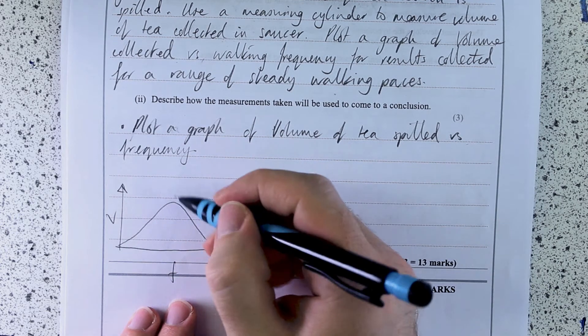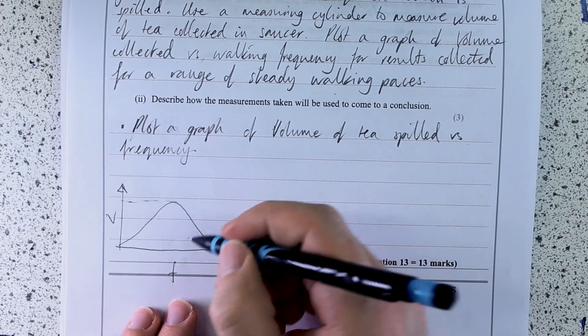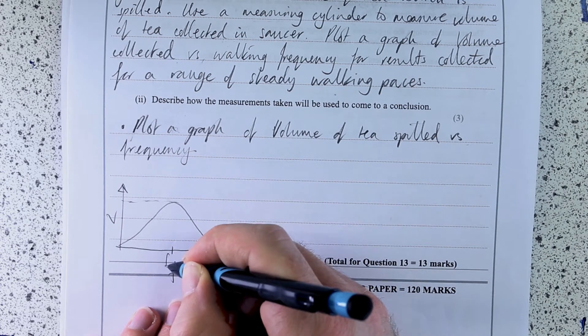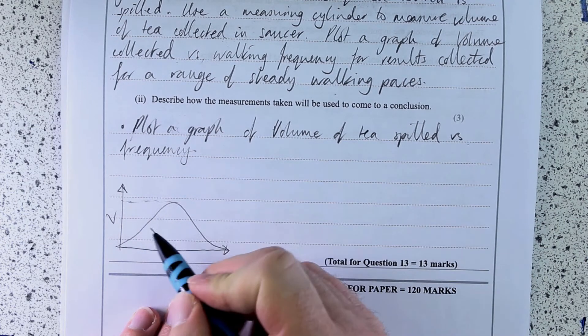Something like this. Where this is my maximum tea spilt. So this should be equal to F nought.